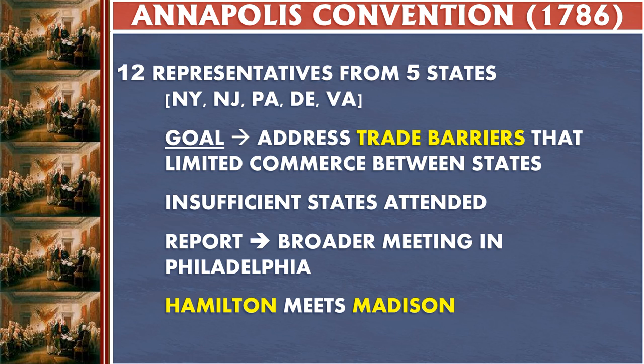In our next lecture, we'll talk more about the details of the Constitution. We should now have an understanding of what was going on: all the problems with the Articles of Confederation being too weak to help the economy and too weak to deal with internal disturbances created a perceived need for a stronger government — though not everyone agreed on what that government should look like, and not everyone wanted a stronger national government.